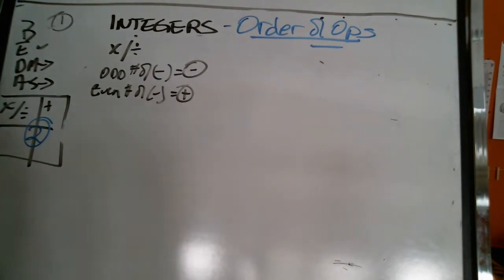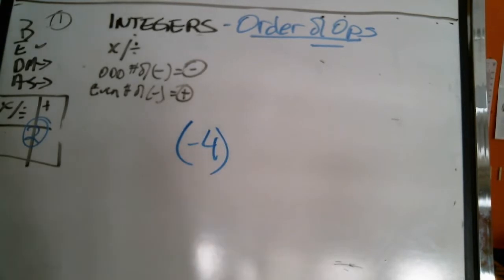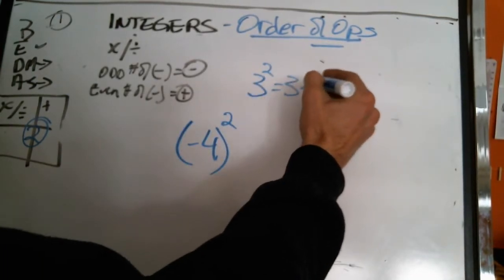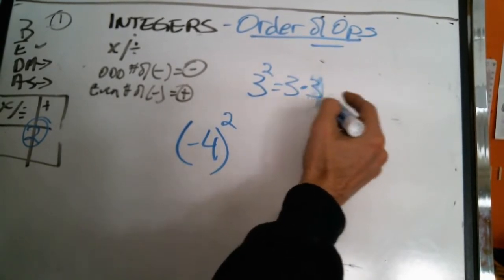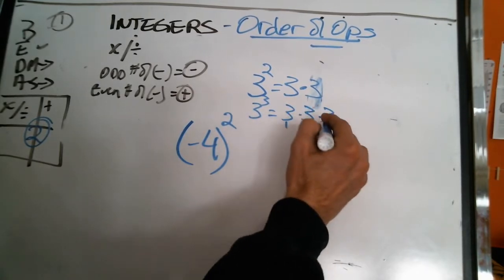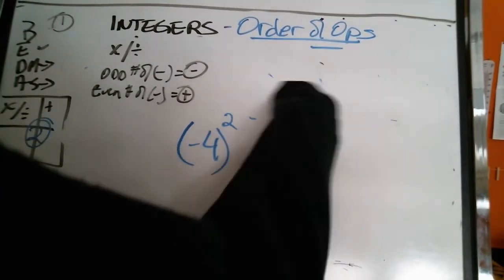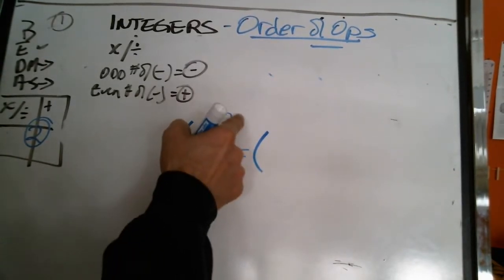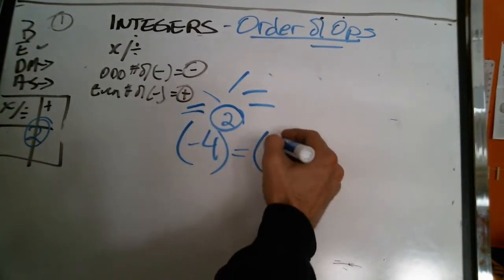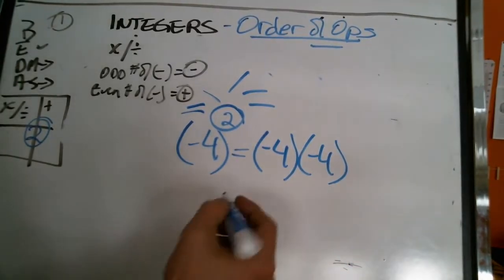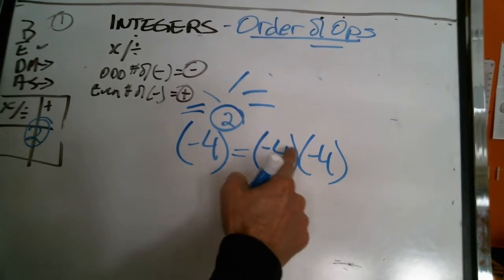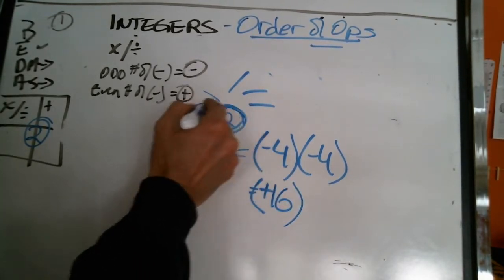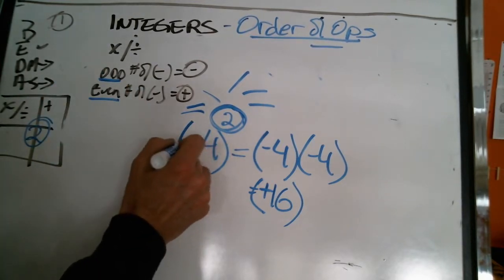We are going to take a negative number — negative four — and square it. Remember what that means: three squared is three multiplied by itself two times; three cubed is three multiplied by itself three times. So negative four squared — how many negative fours do I have? Two. So I get negative four times negative four. Same sign — this is going to equal positive — four times four is 16. If I have a negative inside the bracket with that four and I do it two times, that gives me two negatives.